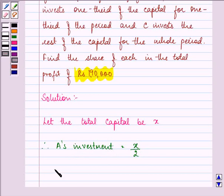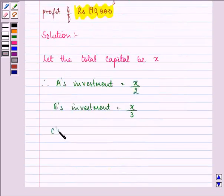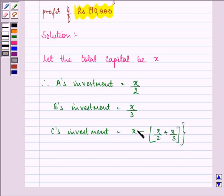B's investment is one-third of the capital, and C's investment is the rest. That means if we subtract the sum of X by 2 plus X by 3, we will get C's investment,